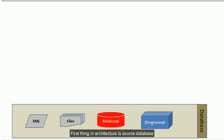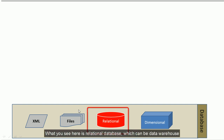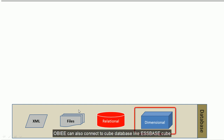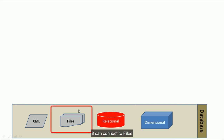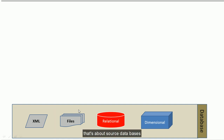The first thing in architecture is the source database. OBIEE can connect to most databases using JDBC or ODBC connections. What you see here is a relational database — it can be a data warehouse. OBIEE can also connect to cube databases like SSAS cubes, files, and XML databases.